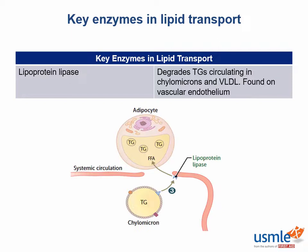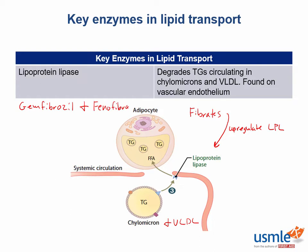Next up we have lipoprotein lipase. Lipoprotein lipase is found on vascular endothelium and acts to degrade circulating triglycerides within chylomicrons and VLDL. On each of these molecules there is APOC2, which acts as a cofactor for lipoprotein lipase activation. The class of lipid-lowering agents that up-regulates lipoprotein lipase and increases triglyceride clearance is the fibrates — specifically gemfibrozil and fenofibrate. Common side effects include myopathies, especially when used with statins, and an increased risk of cholesterol gallstones.